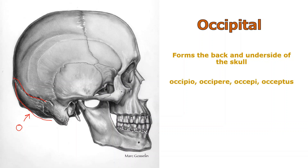The root 'occipio' and other forms of it from the Latin language have something to do with the word for beginning. So this is the 'I begin' bone. Why would it be called that? Well, when you're born the natural way, the first part of you that comes out into the world is the back of your head.